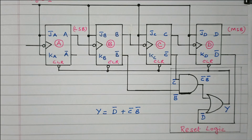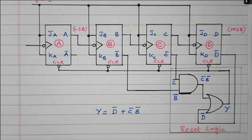In this video we discussed the design of a ripple or asynchronous mod-10 counter. Out of 16 outputs, only 10 outputs (0–9) are available; the remaining 6 are not available. This is determined by the truth table and reset logic. Using a K-map, we got the logical expression Y = D̄ + C̄B̄, which was implemented with a logic diagram. Subscribe the channel for more videos and notifications; a soft copy of this material is available in the drive — link in the description. Thank you for listening.